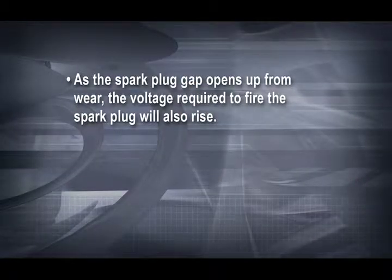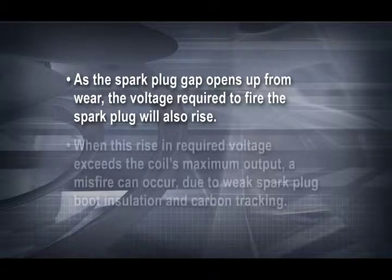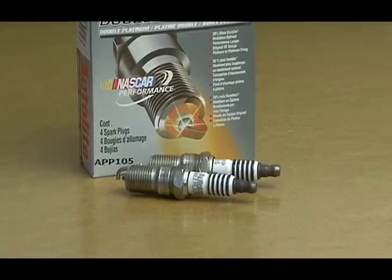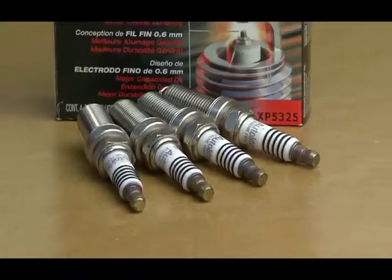Once you remove the spark plug from the cylinder that's misfiring, how does it look? As the spark plug gap opens up, the voltage required to fire the spark plug will also rise. When this rise in required voltage exceeds the coil's maximum output, a misfire can occur. The misfire could be related to weak spark plug boot insulation and carbon tracking. A lean injector can cause secondary voltage demand decline and can lead to breakdown of the insulation and secondary components. You should always use a platinum or iridium fine wire spark plug in modern conventional or coil on plug ignitions. An Autolite double platinum spark plug or an iridium enhanced Autolite XP spark plug should be used in DIS ignitions. While it may seem like a bargain to use a copper core spark plug in a modern ignition system, it really isn't.